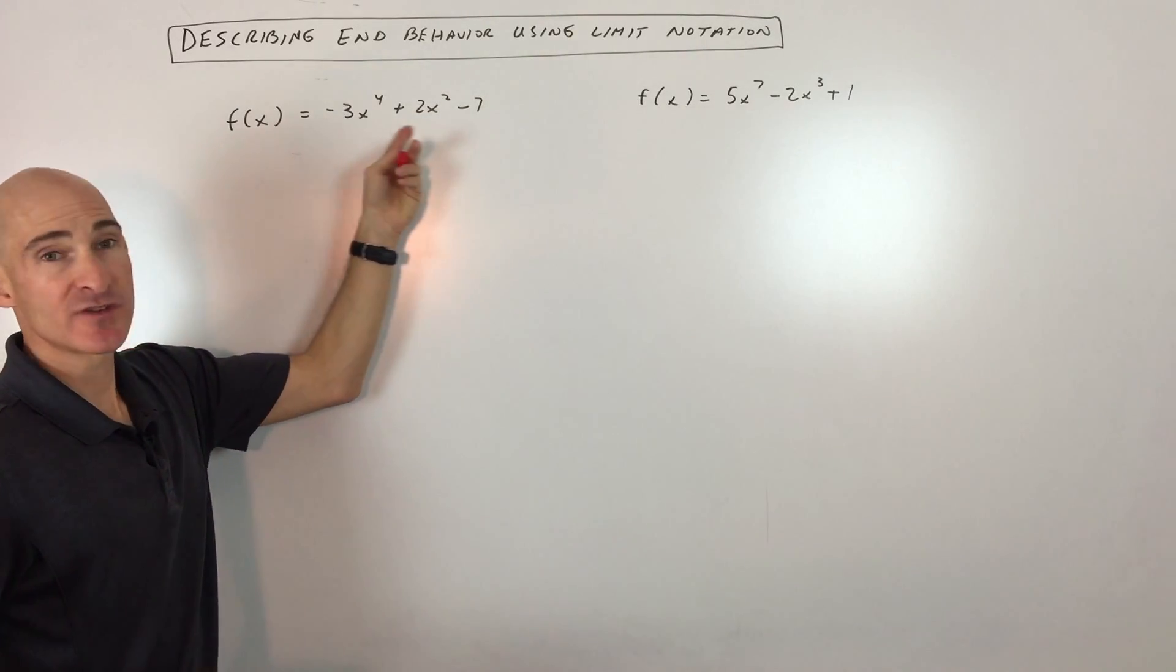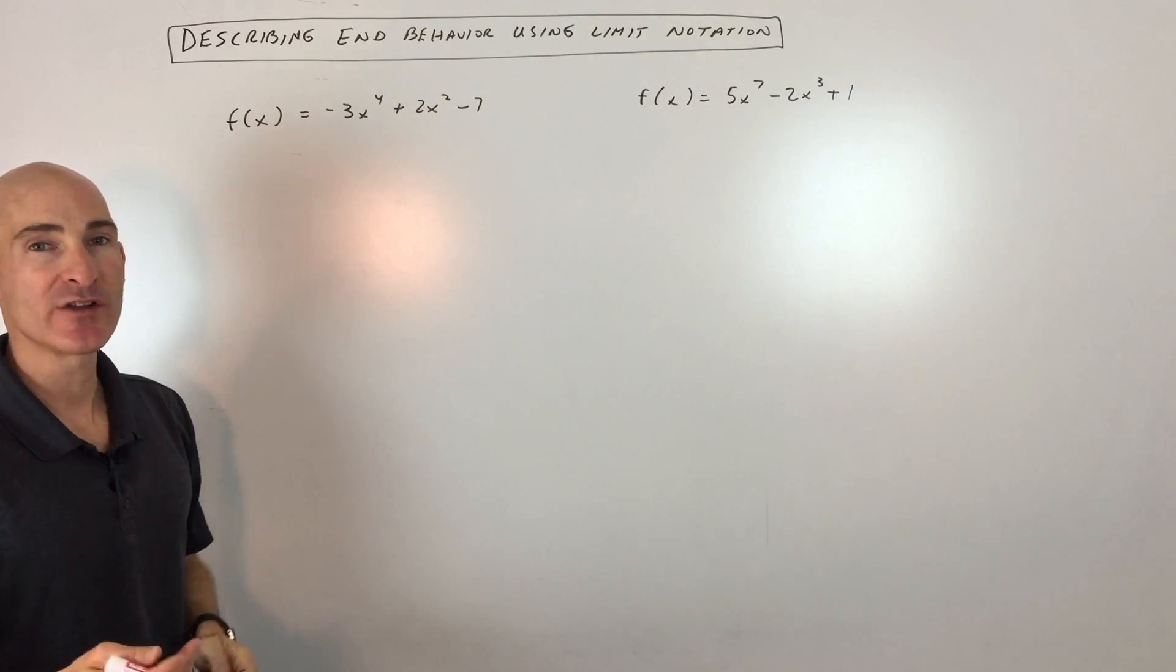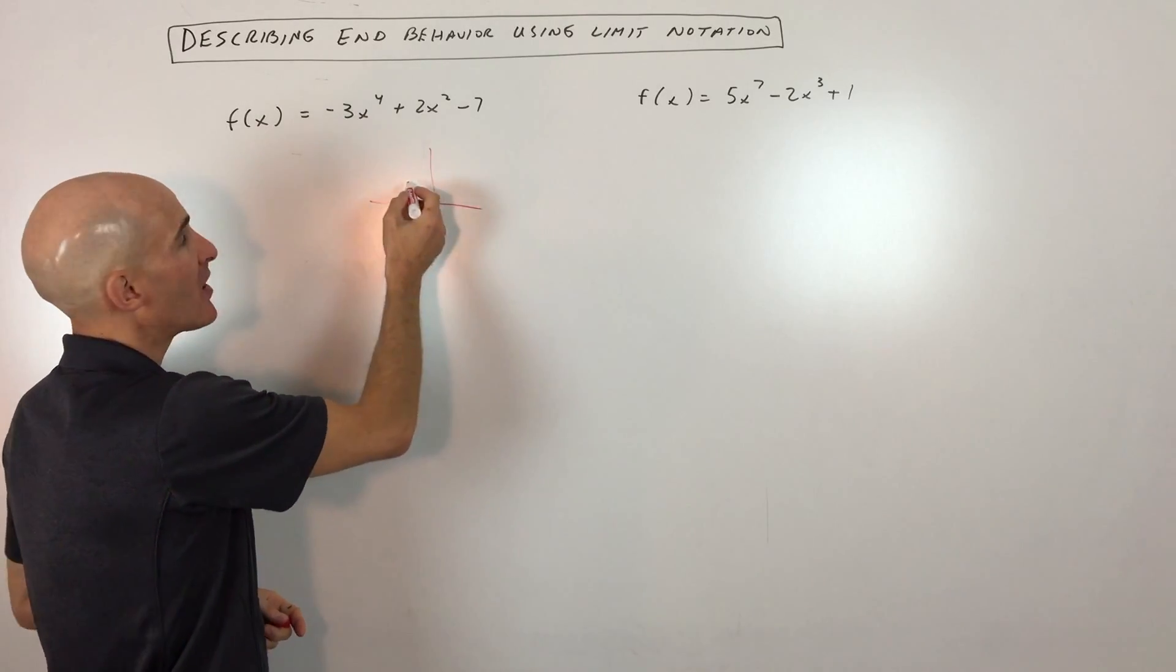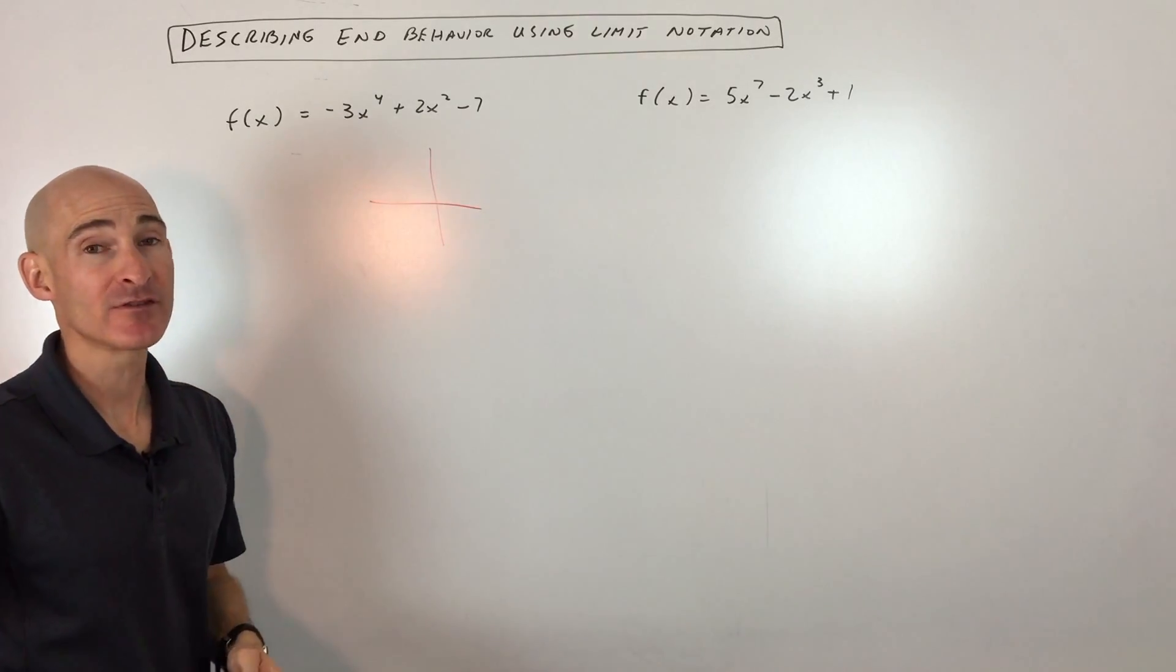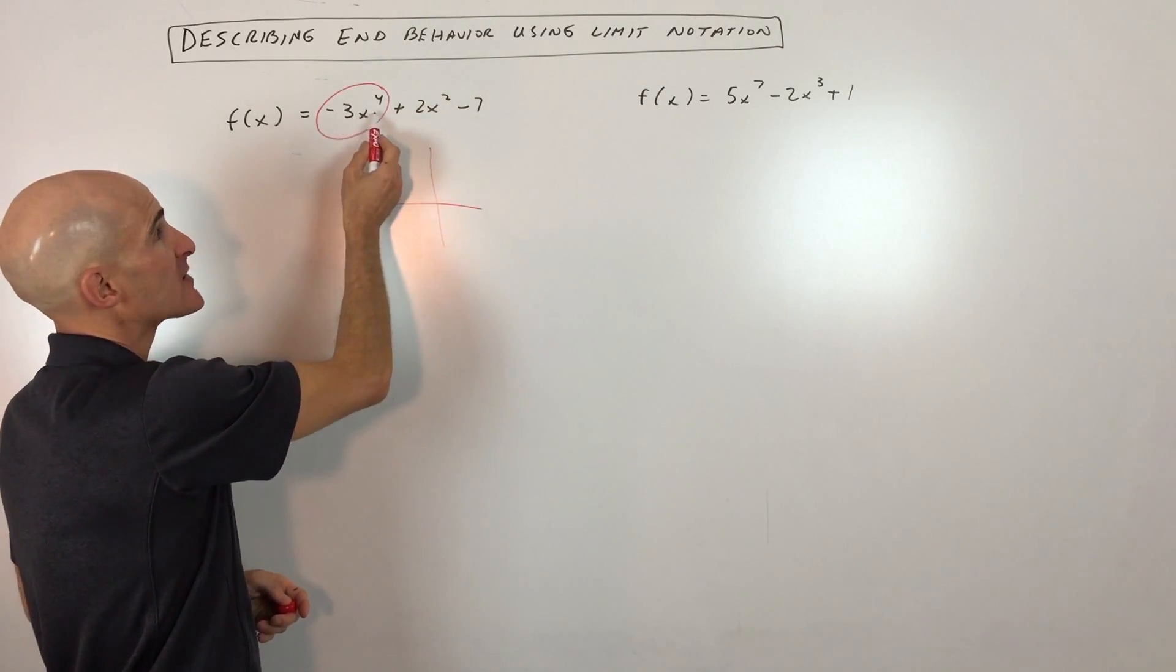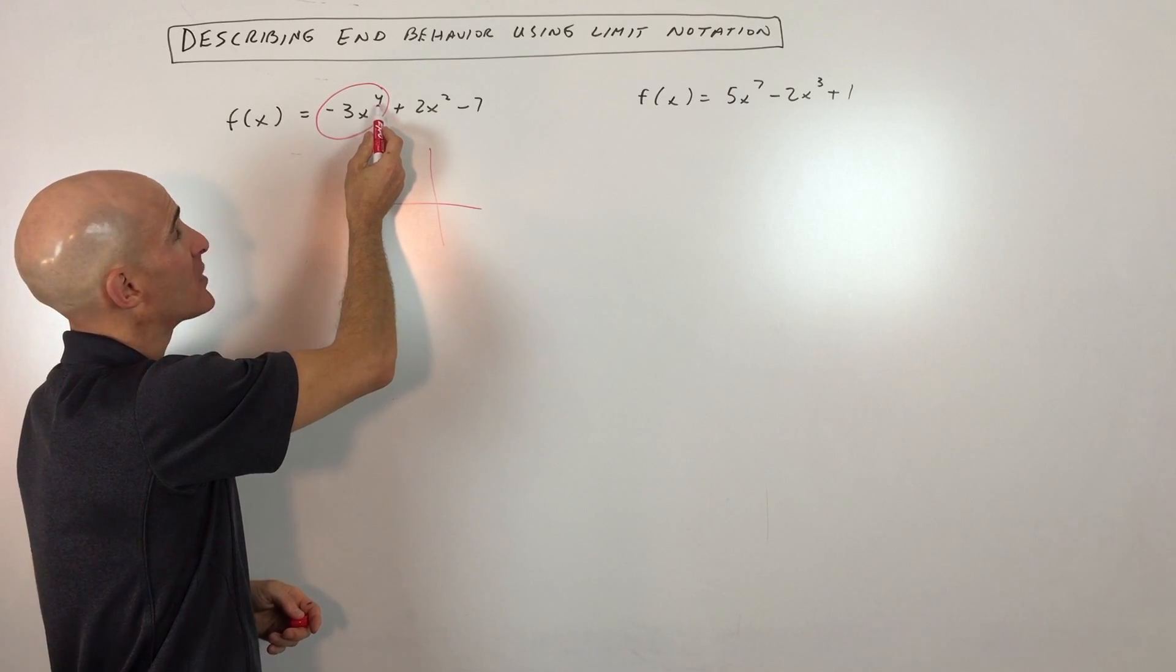First example, they give us this equation of our function, and what we're trying to figure out is does the graph go up to the right, down to the right, up to the left, or down to the left? Well, the first thing we're going to do is zero in on this highest degree term of the polynomial. That's the one with the highest power, the highest exponent here.